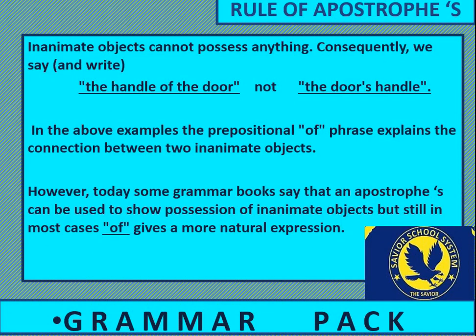Inanimate objects cannot possess anything. Consequently, we say and write 'the handle of the door,' not 'the door's handle.' The prepositional 'of' phrase explains the connection between two inanimate objects. However, today some grammar books say that apostrophe s can be used to show possession of inanimate objects, but still in most cases 'of' gives a more natural expression.